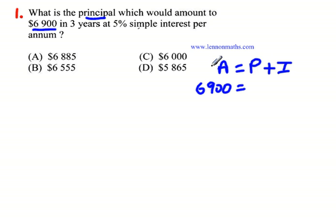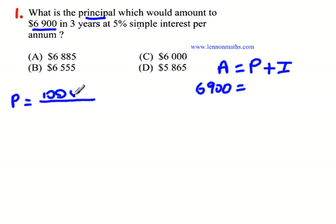We don't know the amount that was put in — that's what the question is asking for: what is the principle? And we don't have the interest. So what are we going to do? We know that from the simple interest formula, the principle is equal to 100 times the interest, divided by the rate times the time. So it's 100 times the interest over the rate times time — that will give us the principle.